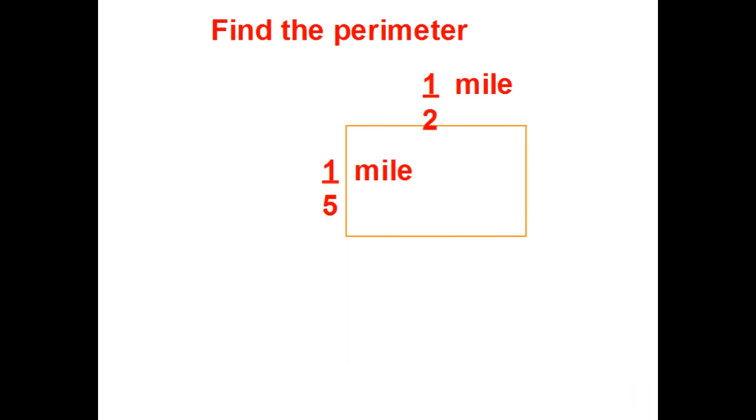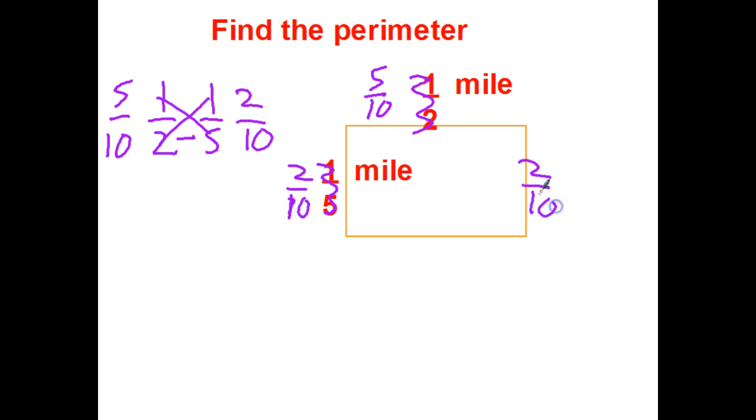Last one for you to try out. Again, cross-multiply to get my new fractions so I have denominators the same. 1 times 5 is 5. 1 times 2 is 2. So the one-half, the long side, is 5 tenths of a mile. The short side, 1 fifth, is 2 tenths of a mile. If this side is 2 tenths, that side's 2 tenths. And if the top is 5 tenths, the bottom is 5 tenths.